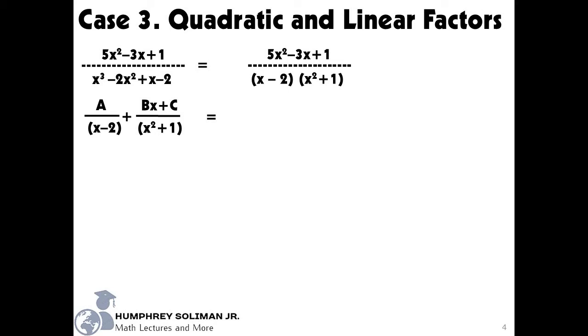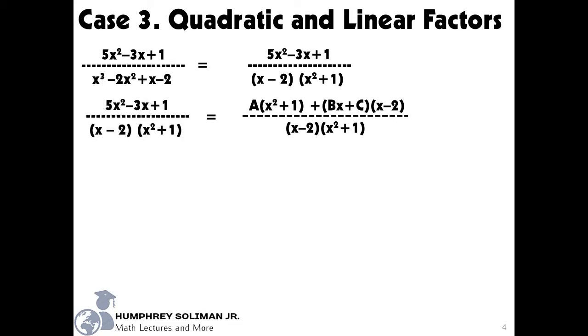We will use the variables a, b and c in the numerators, since we are still in the process of finding the partial fractions, and we don't know those values yet. After that, we will combine these partial fractions into a single rational expression. You can observe that the rational expression we started with and the single rational expression we got with a, b and c have the same denominators. This will allow us to equate the numerator separately.